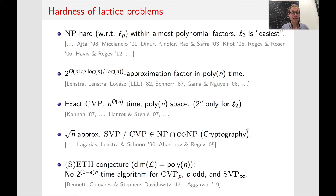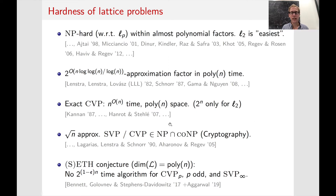This is especially fascinating since for approximation factors starting at square root of n, both SVP and CVP are in NP ∩ co-NP and are not believed to be NP-hard anymore. In fact, cryptographers believe that these problems are still very, very difficult to solve even for polynomial approximation factors.